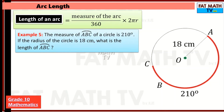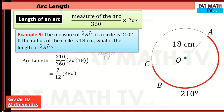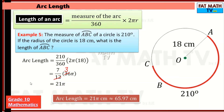Last example, number 5: the measure of arc ABC of a circle is 210 degrees. If the radius of the circle is 18 centimeters, what is the length of arc ABC? Using the formula — 210 over 360 times 2πr. Simplify the fraction by dividing both by 30: 210 divided by 30 is 7, and 360 divided by 30 is 12. Then 2π times 18 is 36π. Cancel 12 and 36 by dividing by 12, giving 3. So 7 times 3 is 21π. The arc length is 21π centimeters, or approximately 65.97 centimeters.